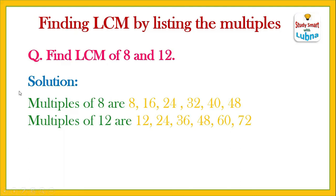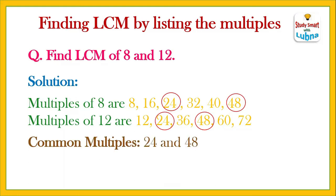Now, after writing the multiples of 8 and 12, we have to find the common multiples of both. The first common multiple is 24, which is a multiple of 8 as well as 12. The second common multiple is 48, which is also a multiple of both 8 and 12. So the common multiples are 24 and 48. Since LCM means Least Common Multiple, the LCM of 8 and 12 is 24.